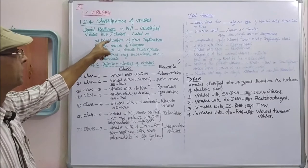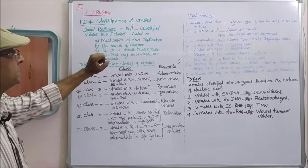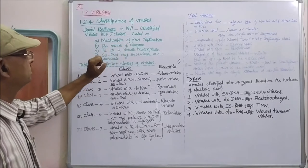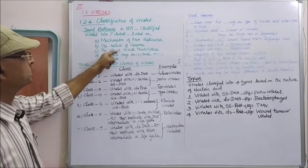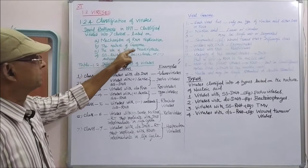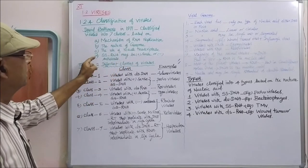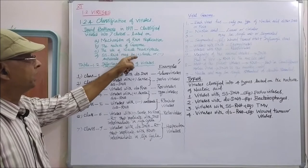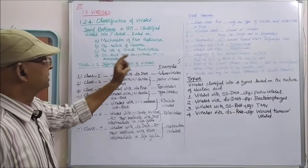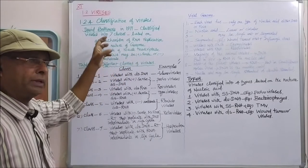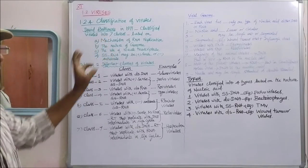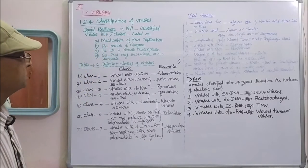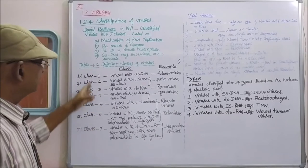The four characteristic features used for classification are: number one, the mechanism of RNA replication; number two, the nature of the genome; number three, the use of reverse transcriptase; number four, whether single-stranded RNA may be plus-sense or minus antisense. Based on these four characteristics, viruses are declassified into seven classes.